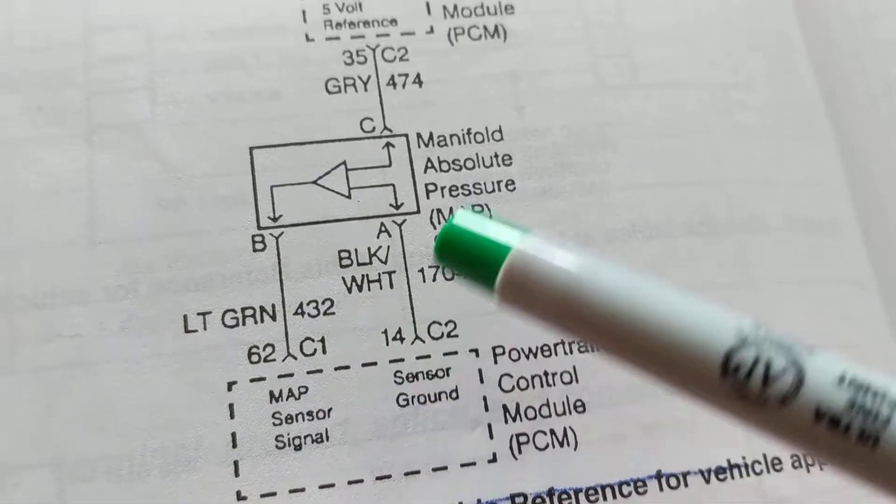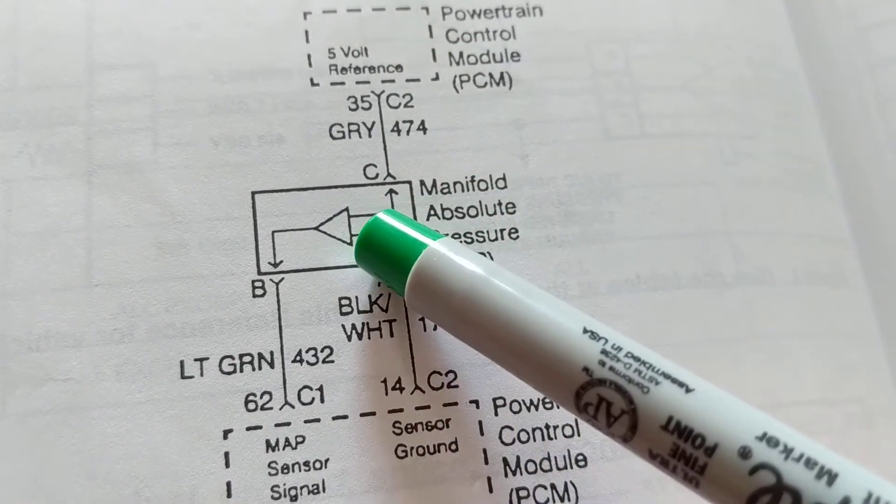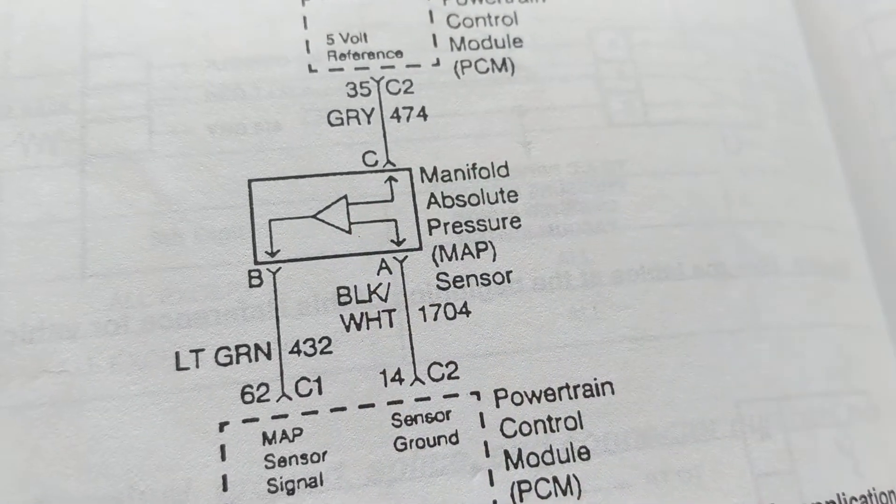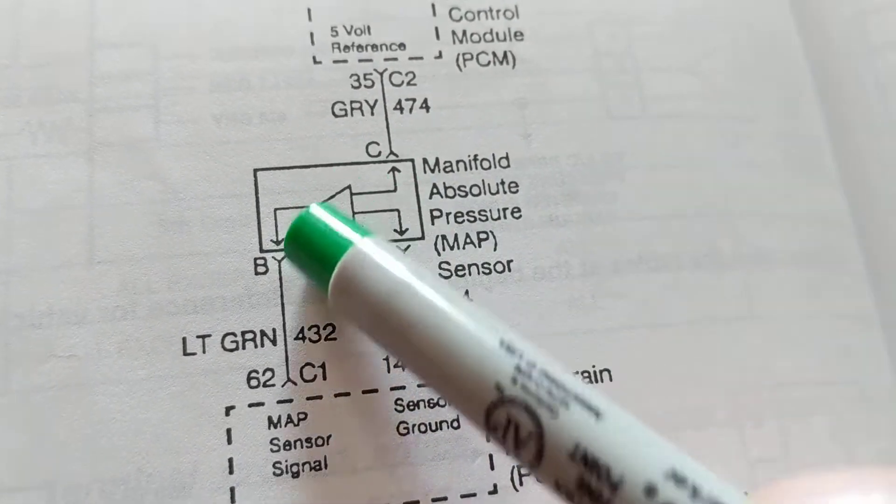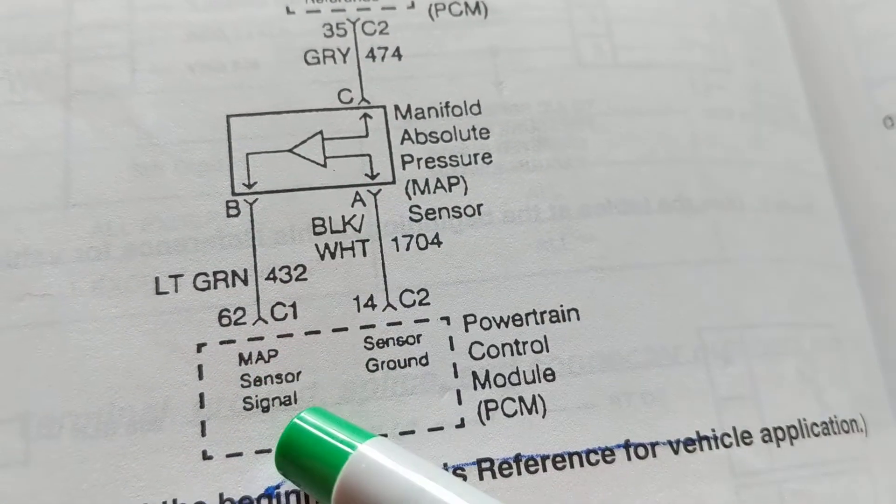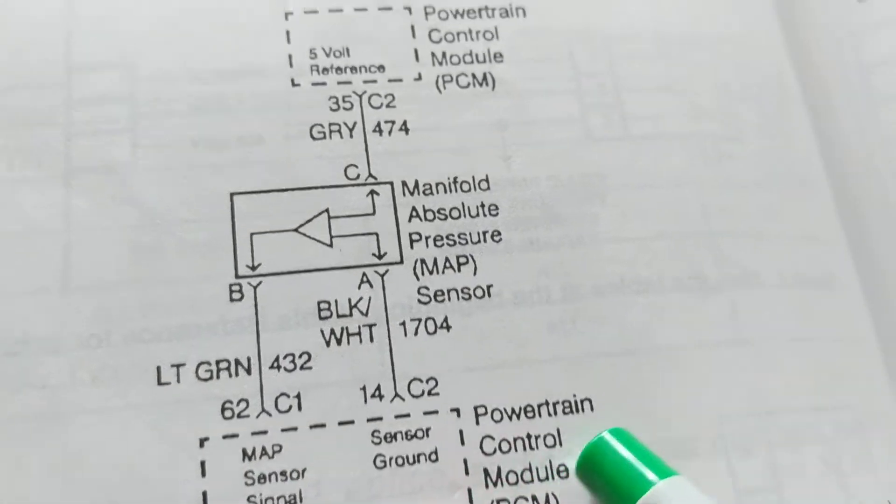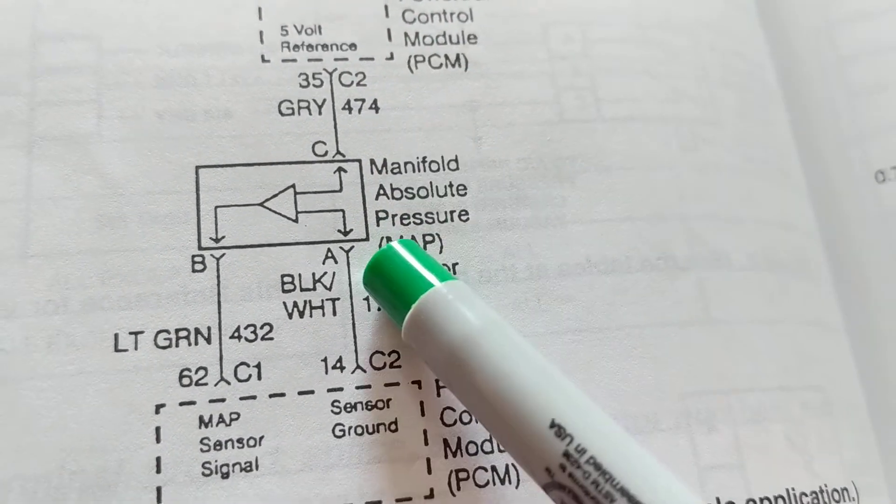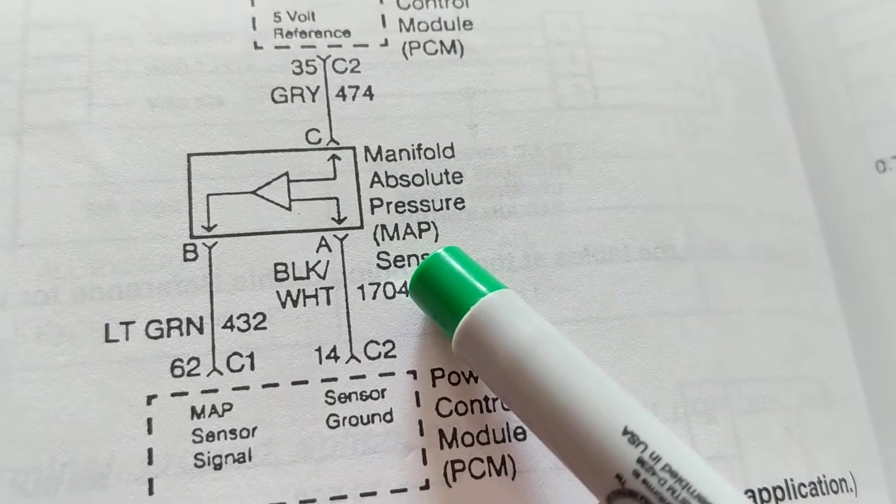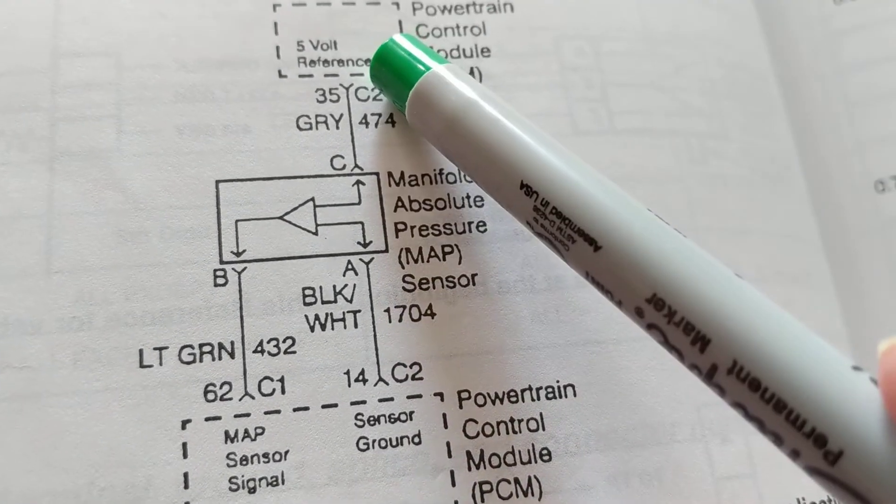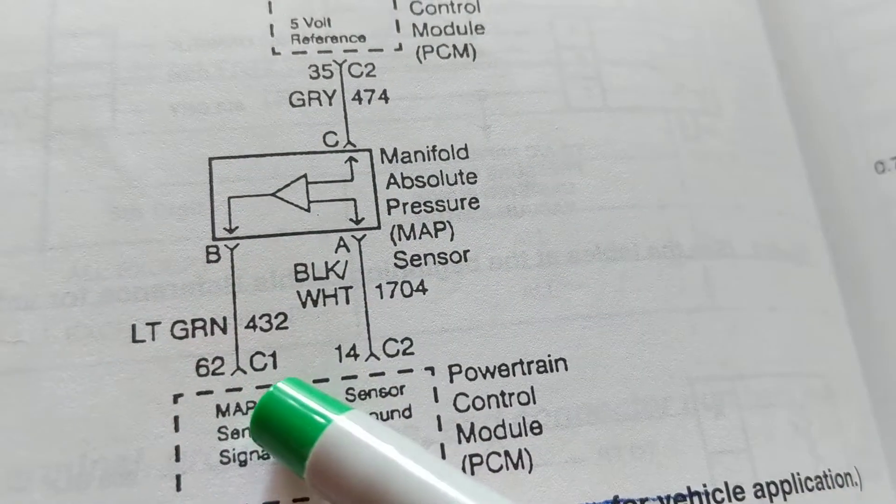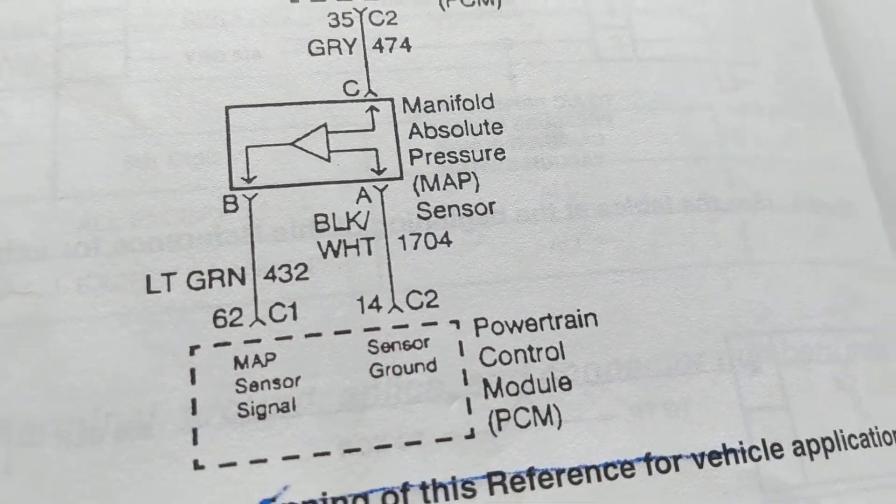So it's giving it a five volt reference and it's giving it a ground. Where's the output? Over here, pin 62. This is pin 14. So therefore input, input. It's like a comparator. I don't want to get too technical, but anyway, two inputs, one output. The output will go back to the PCM which gave the five volt and the ground in the first place.